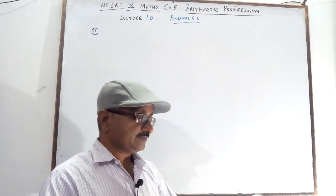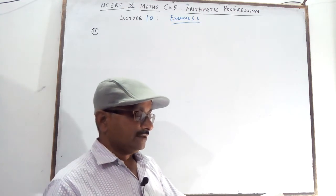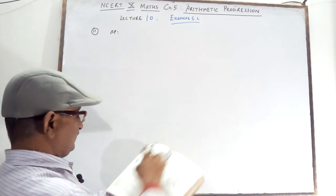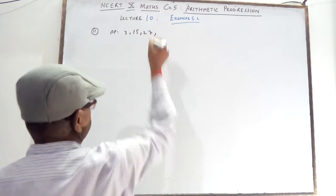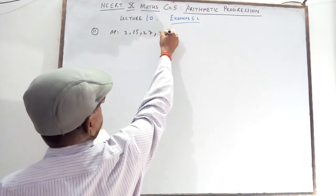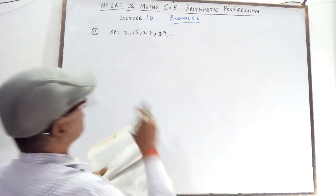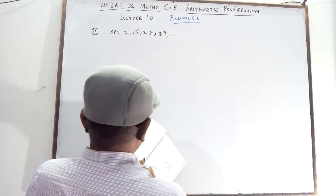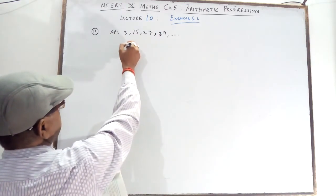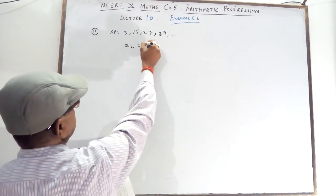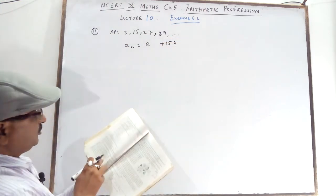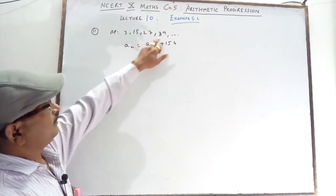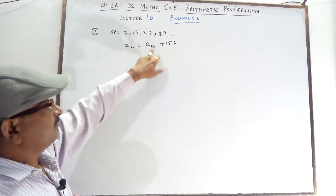In this question you are finding which term of the AP is 132 more than its 54th term. The AP given is 3, 15, 27, 39. Which term of this AP will be 132 more than its 54th term?